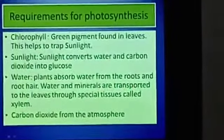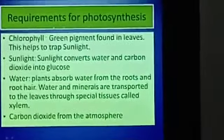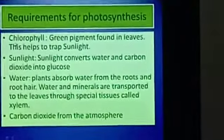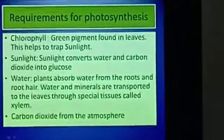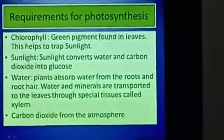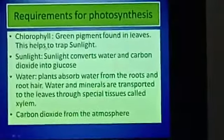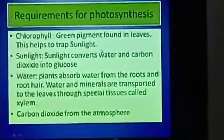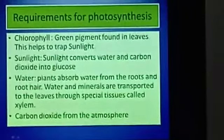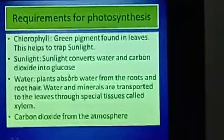The requirements for photosynthesis — first and foremost is chlorophyll. It is a green pigment found in the leaves. This helps in trapping the sunlight. Sunlight converts water and carbon dioxide into glucose.